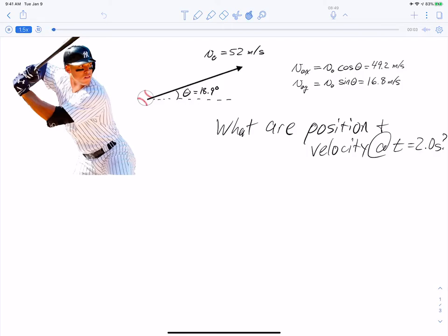We're looking at this Aaron Judge hit that went for a home run, and we are told the initial conditions, which is that the initial velocity is 52 meters per second at an angle of 18.9 degrees above the horizontal, and we want to know what are the position and the velocity at time equals 2 seconds. I've already calculated or broken down the initial velocity into its components because we worked on that before, so we have those to use when we need them.